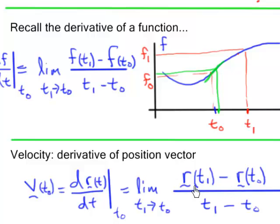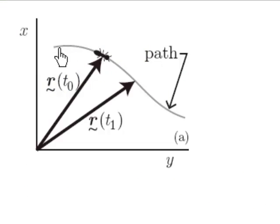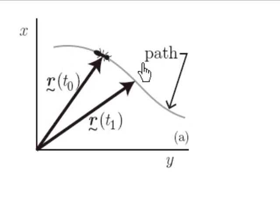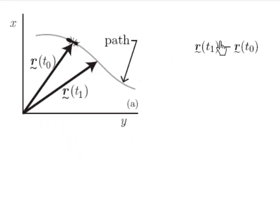But of course we have to think about what this means: what is the difference between these position vectors, and what does it mean in the limit as t1 approaches t0? In keeping with the insect theme, I'm going to imagine an ant walking along a path. I've reduced this to two dimensions since it's harder to draw these vectors in three dimensions. At some given time, the position vector of this ant is r at time t0, and a short time later it's r at time t1.